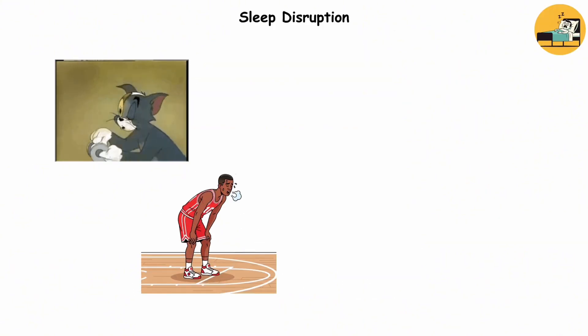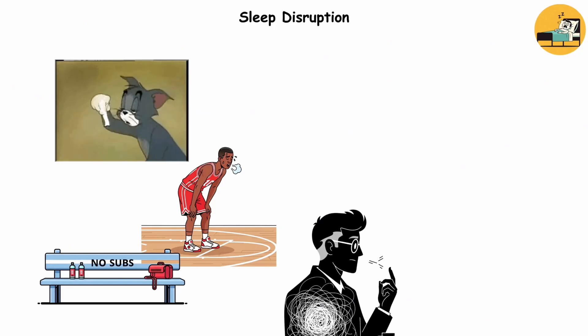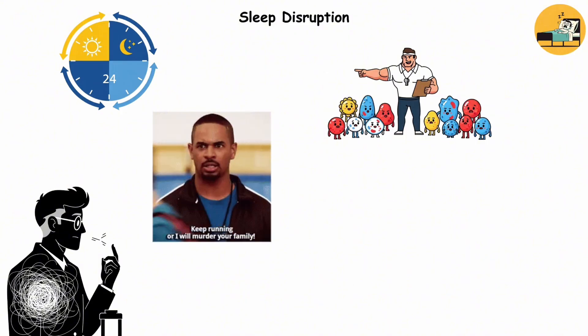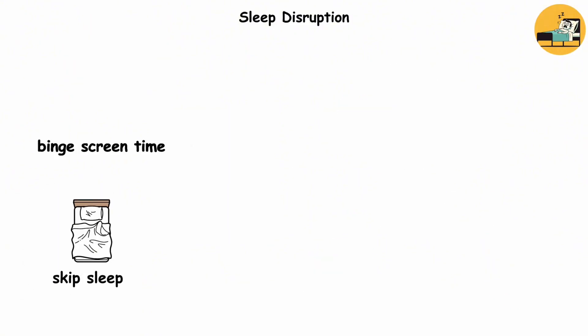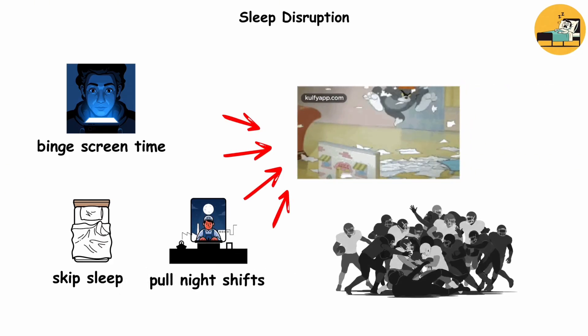Sleep disruption. Ever pulled an all-nighter and felt like you're playing a game in overtime with no subs? Your body feels that chaos too. Your circadian rhythm is your coach, setting the playbook for every cell, telling them when to repair, rest, or go full offense. But when you skip sleep, binge late-night screen time, or pull night shifts, that playbook gets shredded. The team is running plays blind.